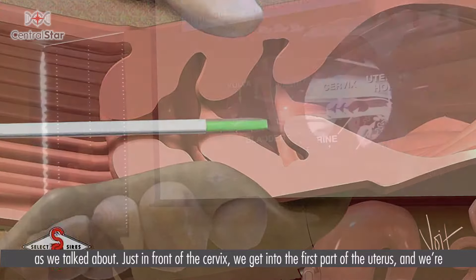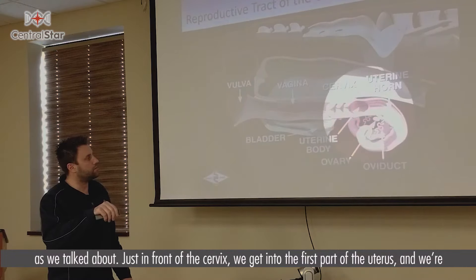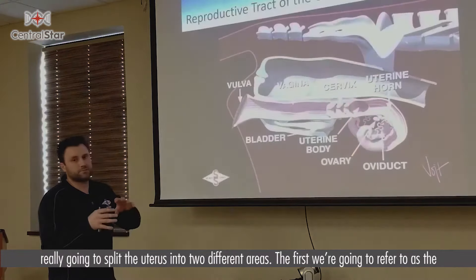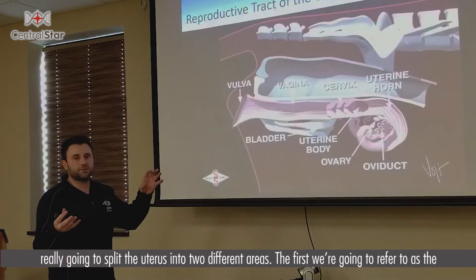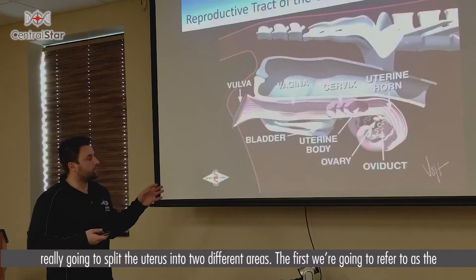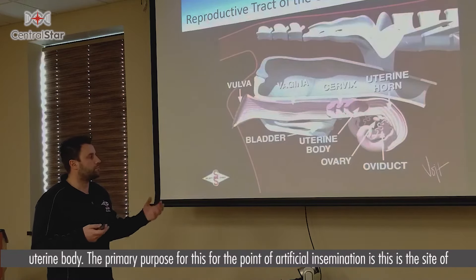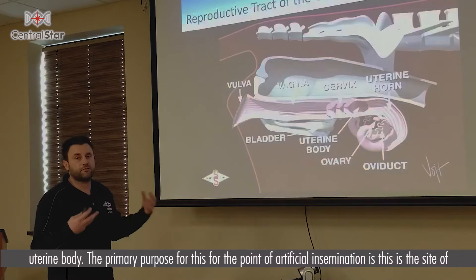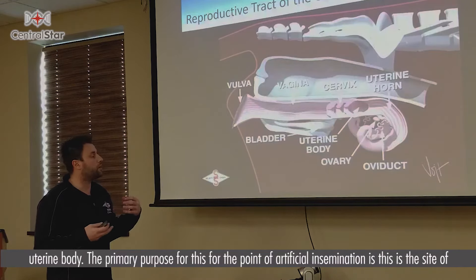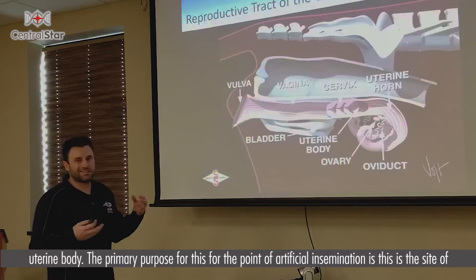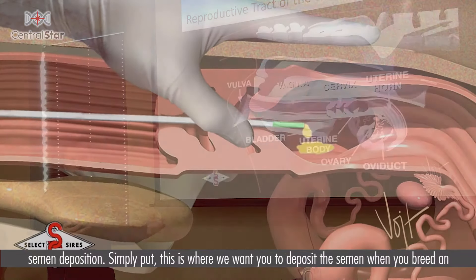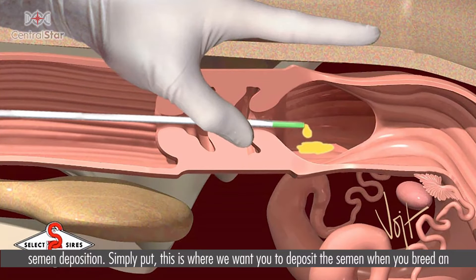Just in front of the cervix we then get into the first part of the uterus. We're going to split the uterus into two different areas. The first we're going to refer to as the uterine body. The primary importance of this for artificial insemination is that this is the site of semen deposition — simply put, this is where we want you to deposit the semen when you breed an animal.